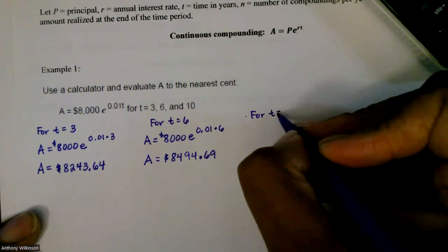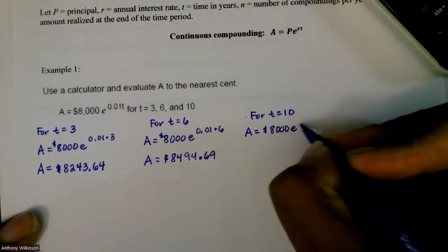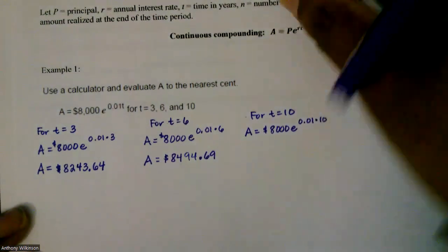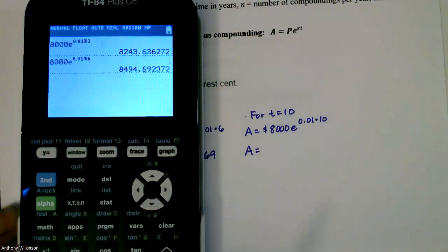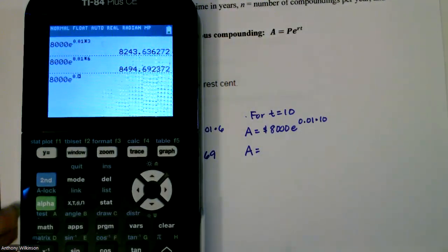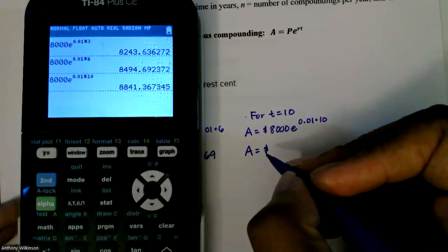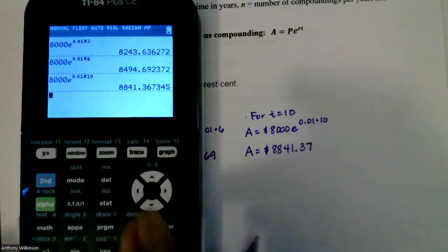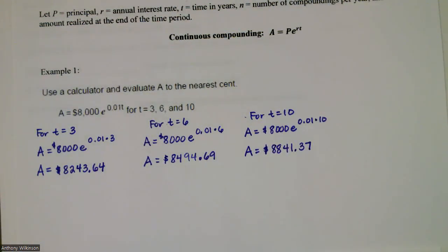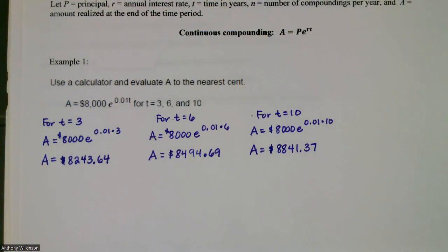And now for T equal to 10, this would be 8,000 times e to the 0.01 times 10. On the calculator, type 8,000, then 2nd LN for the e, then 0.01 times 10. Rounded to 2 decimal places, it would be $8,841.37. That's how we use a calculator to evaluate problems with continuous compound interest.